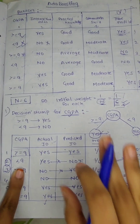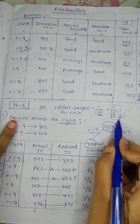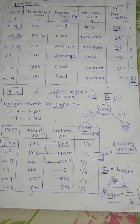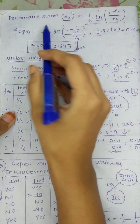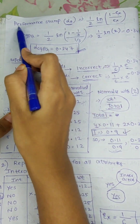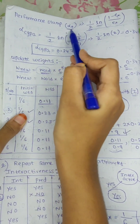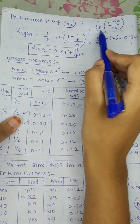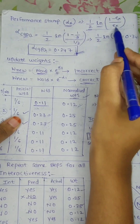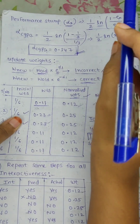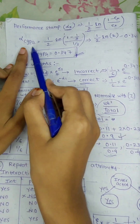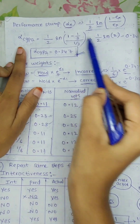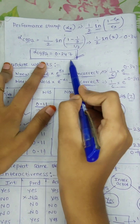After calculating the error, there are three steps: initialize weights, draw decision stumps, and calculate the error value. Then we calculate alpha — the performance stamp. The alpha formula is: half into ln of (1 minus epsilon) divided by epsilon, where epsilon is the error. So alpha CGPA = half into ln of (1 - 1/3) divided by (1/3). After computing, we get the alpha value for CGPA.